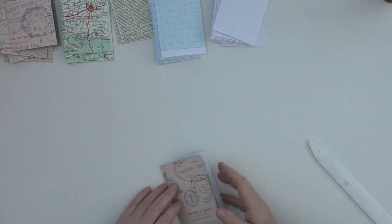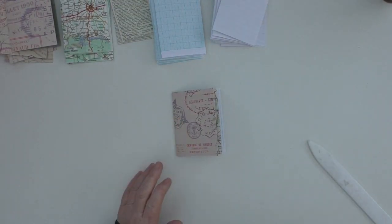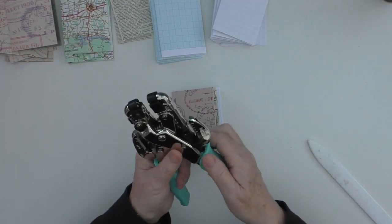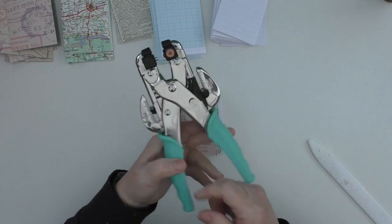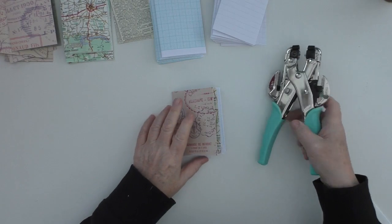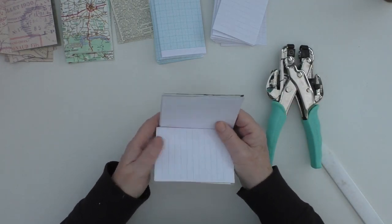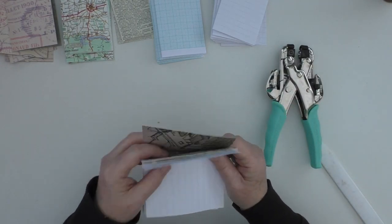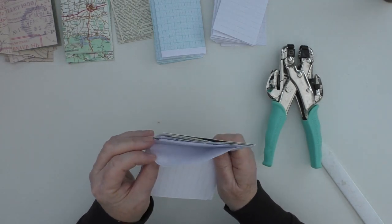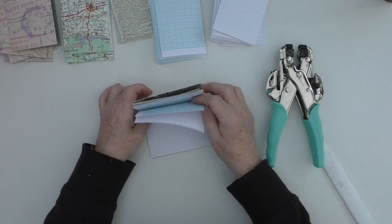Once I know what papers and the order that I'm going to put them in my little notebook, I'm just going to take my punch and I set this at about a centimeter, which I think is something like just over half an inch. I'm just going to use a small punch hole on this and I'm just going to make sure the papers are all kind of centered.